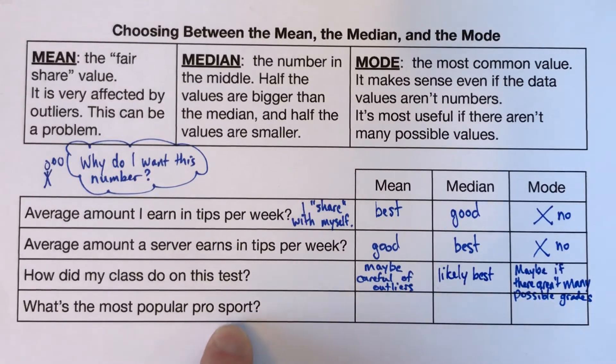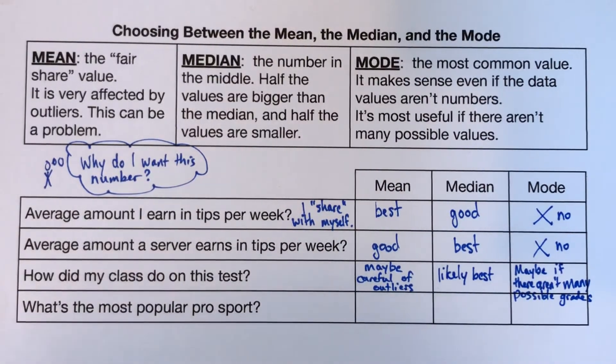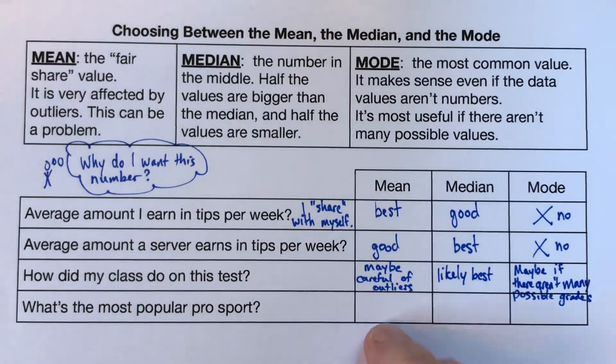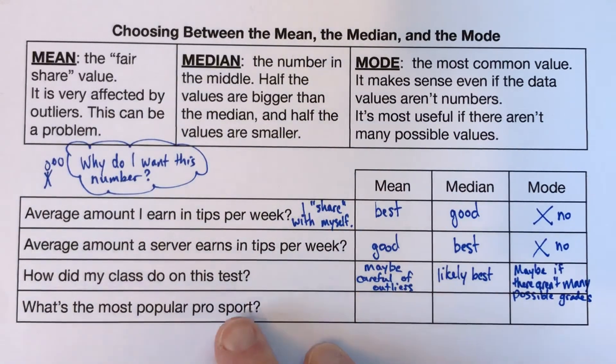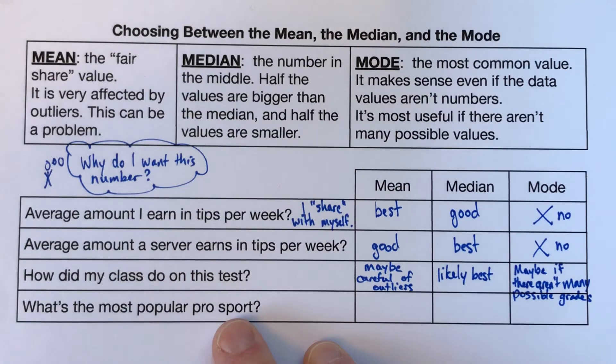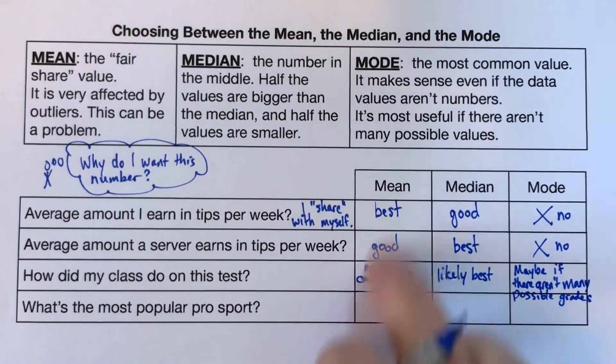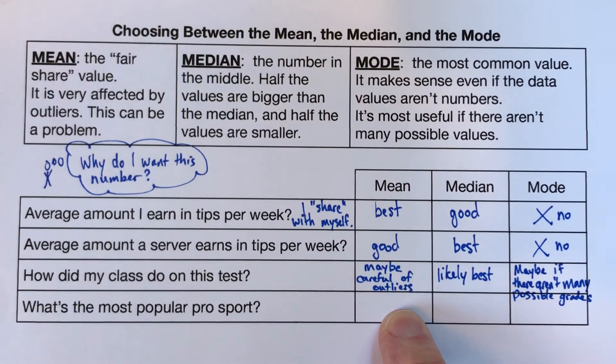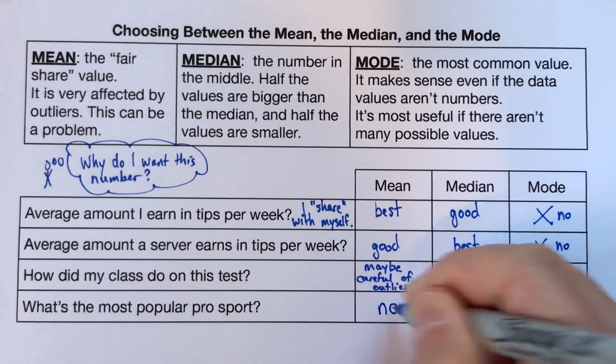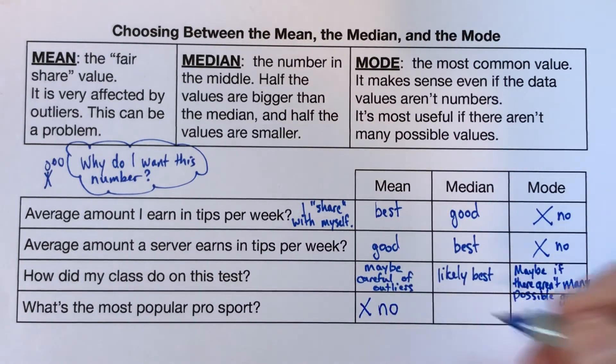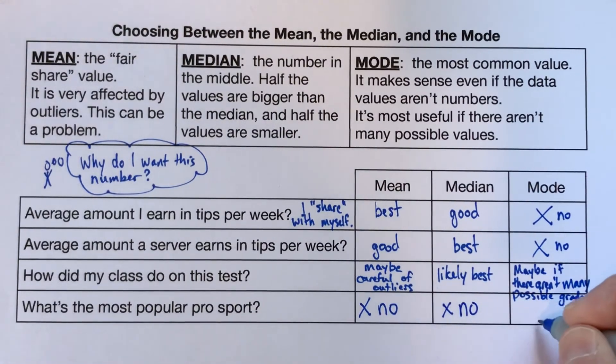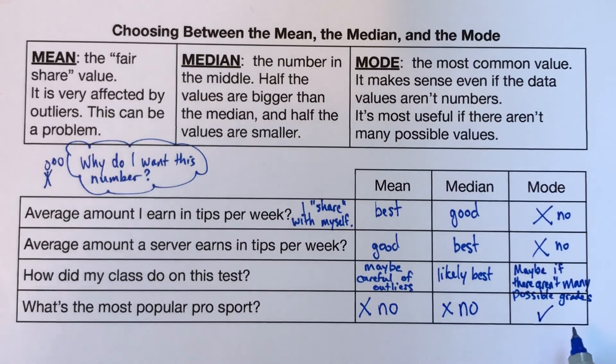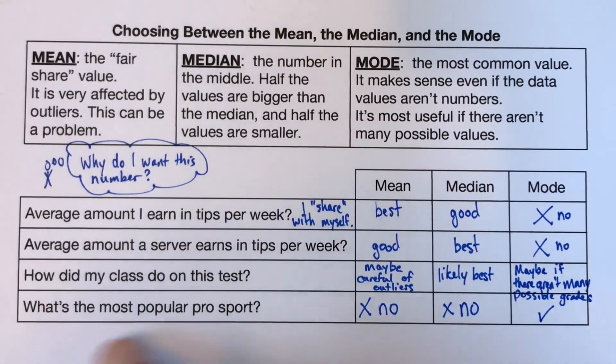For the fourth question, what's the most popular professional sport? This one is one where there's only one good answer here. So the possible answers people might give, they might say basketball, the NBA is my favorite, or I'm a hockey fan, the NHL is my favorite pro sports league. So we can't find the mean of those because the values, the answers they might give are not numbers, so no. And same with the median, we can't find the median of them. So the mode is the only good answer here. And that will exactly help you find the answer. If the most people say basketball, then basketball is the mode, and that's the most popular pro sport.